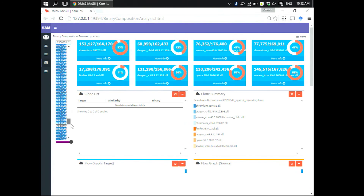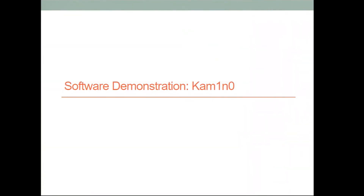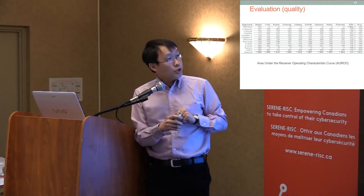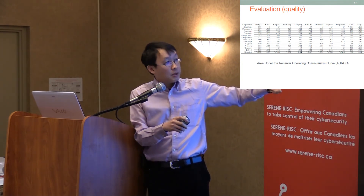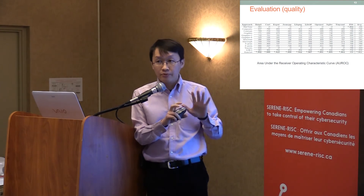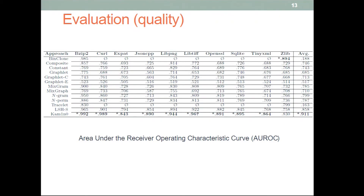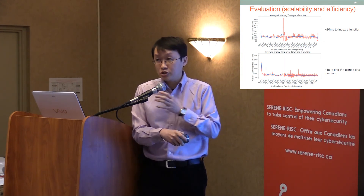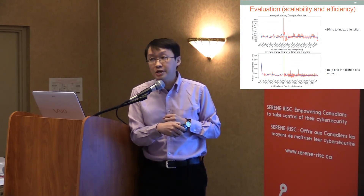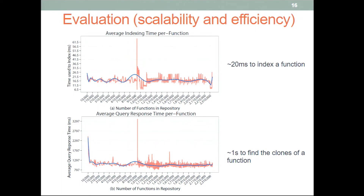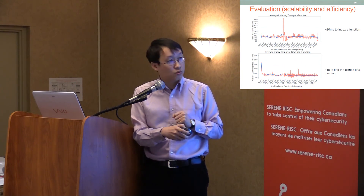We conducted extensive experiments on Camino, comparing it with 12 other competitors. Many of them are not scalable, but we still made our best effort to do a fair comparison in terms of recall and precision on 10 different open source libraries — and we outperform all competitors. We also spent a lot of time ensuring efficiency and scalability, testing from 10,000 functions to 2.3 million functions. On average it takes about 20 milliseconds to index one function and about one second to search for clones of a function.